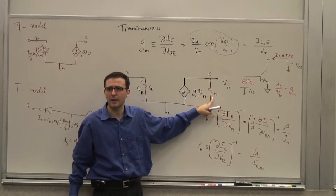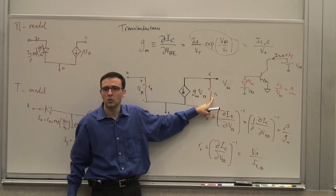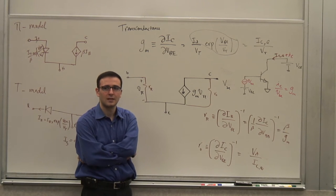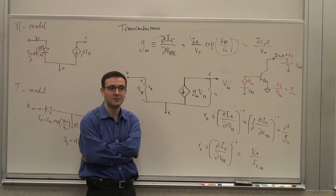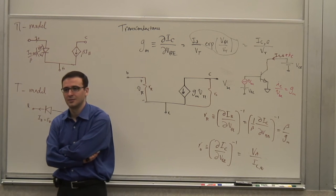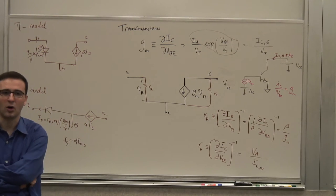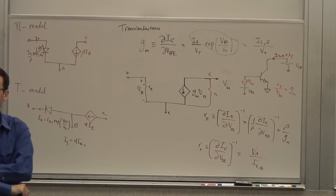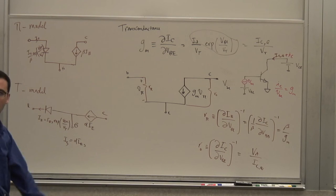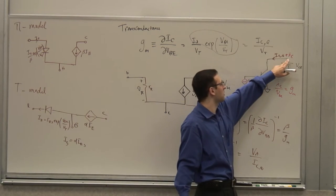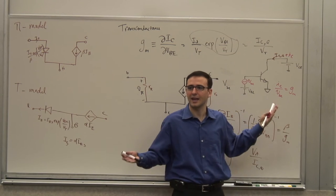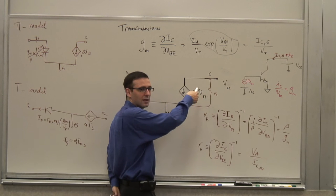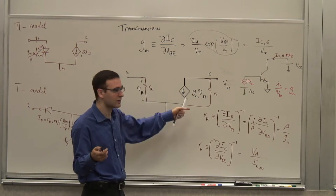Why is Ro a parasitic component? What if it's zero? It's a short in parallel with the current source — so there will be no current provided to the outside circuitry; all current will circulate inside the transistor. So you get zero gain. You want it to be as large as possible, so it steals as little of the output current as possible.